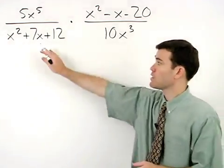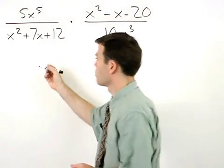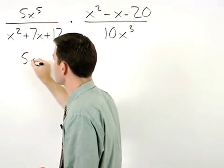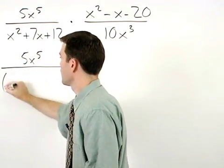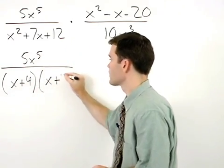So here notice that the denominator of our first expression factors and we have 5x to the fifth over x plus 4 times x plus 3.